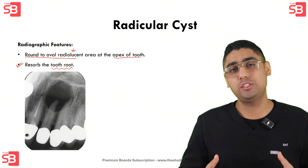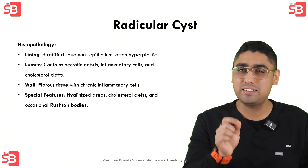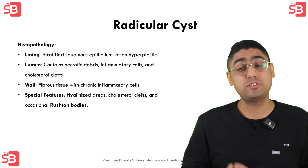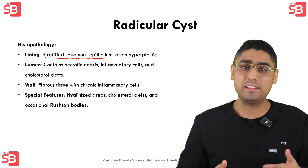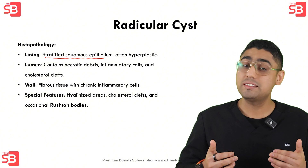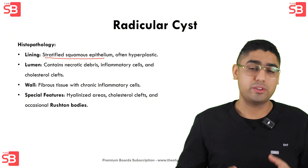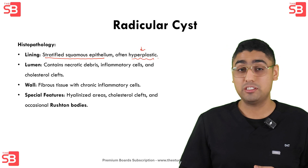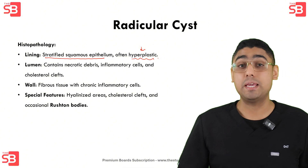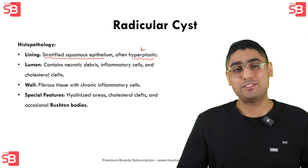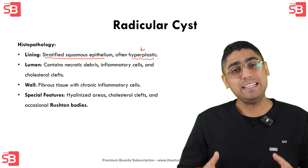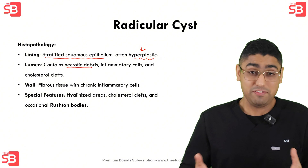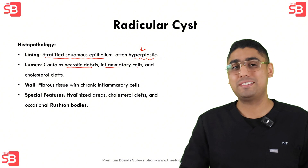Let's talk about the histopathology of the radicular cyst, which has some distinctive elements to keep in mind. The cyst's lining is made up of stratified squamous epithelium, which can vary in thickness and often shows signs of hyperplasia. As a student preparing for INBDE, ADAT, or AFK examinations, you should know the difference between hyperplasia, hypertrophy, and hypoplasia. Inside the cyst lumen, we will find necrotic debris, various inflammatory cells, and the characteristic cholesterol clefts.